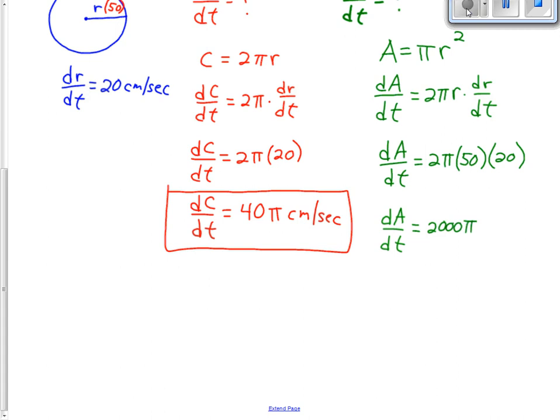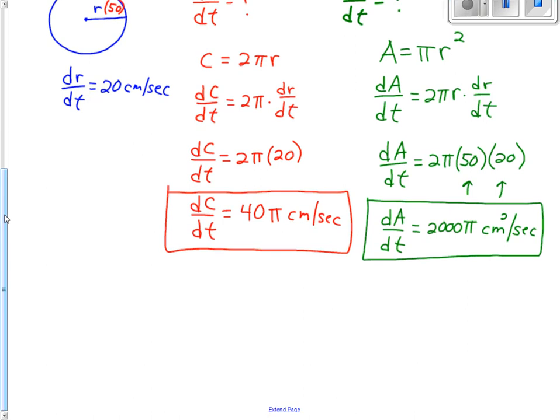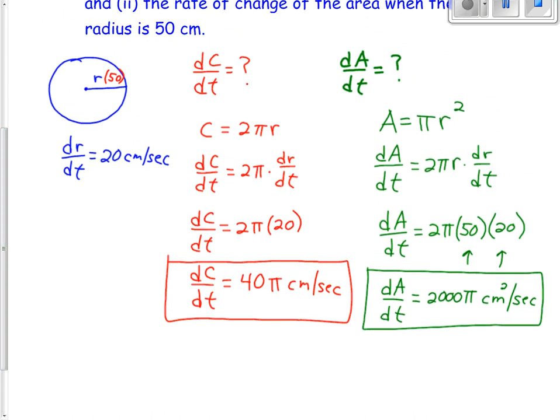So we got dA/dt equals 2π times 50 times 20, which is 2,000π. The units on this: the area is going to be in square centimeters and time is in seconds. The 50 was centimeters, the 20 was centimeters per second, so we would have centimeters times centimeters per second, which gives you square centimeters per second. Also notice both of these rates are positive. In this problem, the circles are getting bigger, so you should get positive rates of change.